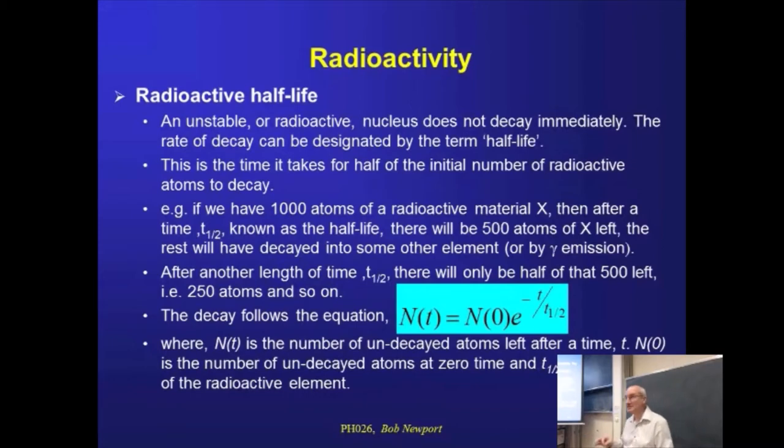Now, this is a statistical process. So, it is not going to be 500, 250, 125 precisely. This is going to have statistical random fluctuations around those numbers.